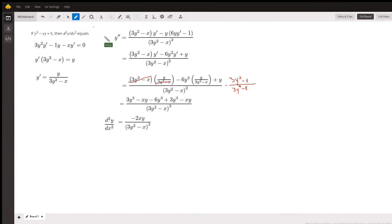Okay, we're given this implicitly defined relation, asked to find the second derivative of y with respect to x. So we've got to start by finding the first derivative implicitly.